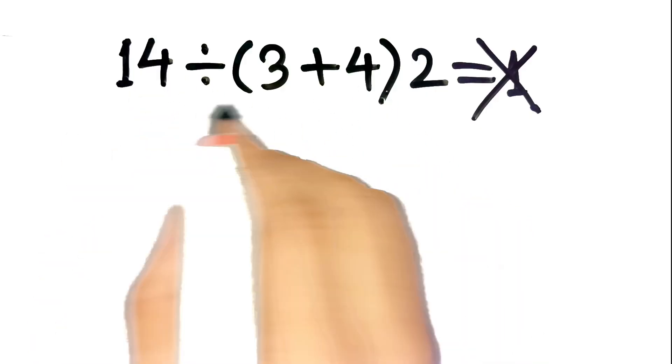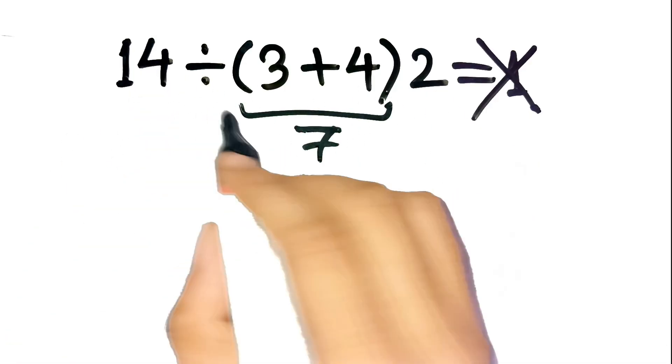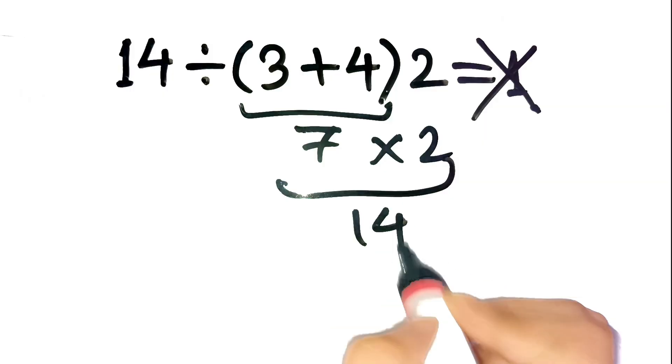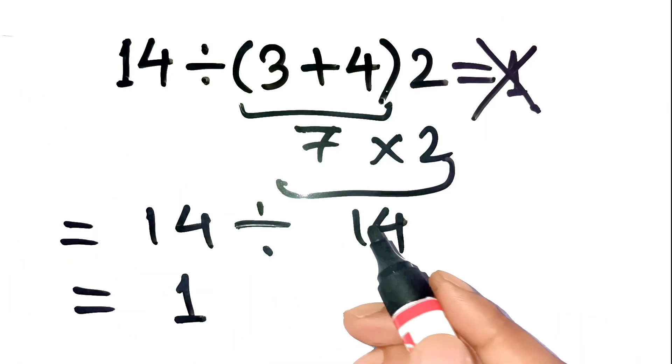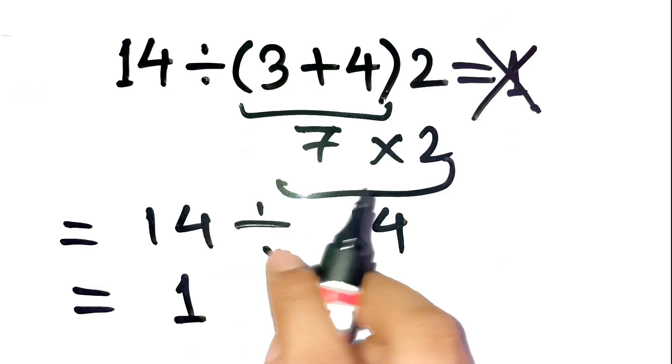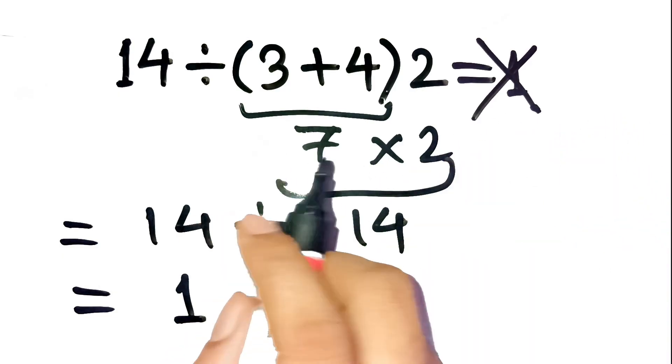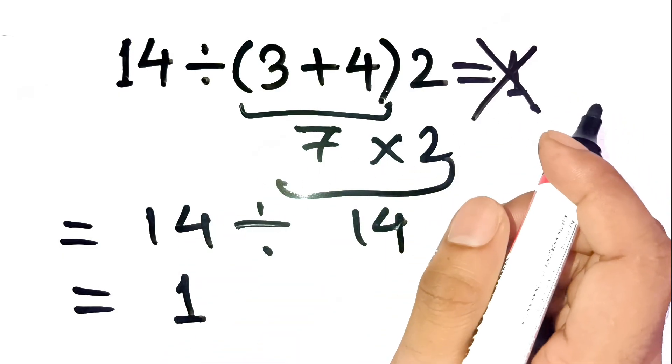Most people instantly go, okay, 3 plus 4 inside the parentheses is 7, then 7 times 2 is 14. And finally, 14 divided by 14 is 1. Done. But hold on, that's not quite how math rules work. This is one of those problems where the answer looks obvious, but the logic is just a little bit off.